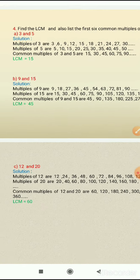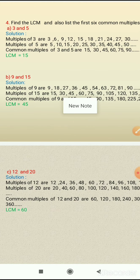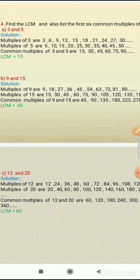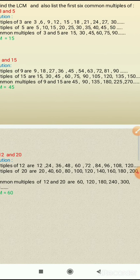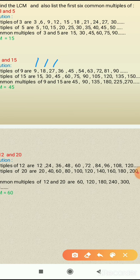The next example is 9 and 15. First we find the multiples of 9: 9, 18, 27, 36, 45, 54, 63, 72, 81, and 90. In this way we get the multiples of 9.